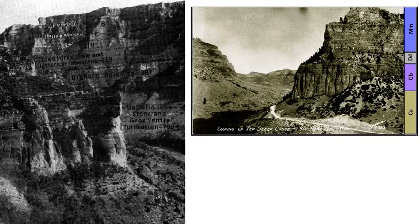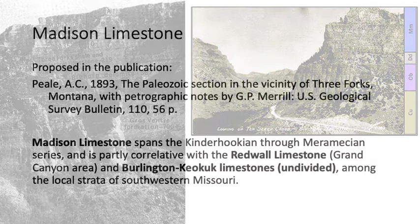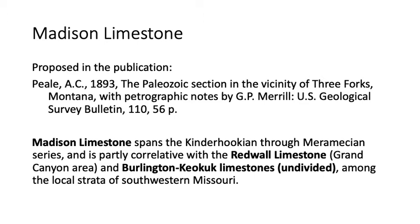You can do it informally by labeling units A, B, C, D as well. The Madison was proposed as a formal formation back in 1893 near Three Forks, Montana. It spans the Kinderhookian through the Meramecian series — at least partially three of the four series within the Mississippian. It's partly correlative with the Redwall Limestone and equivalent to local Missouri rocks like the Burlington and Keokuk.